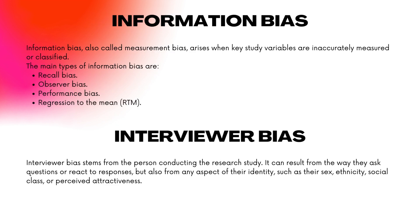Information Bias, also called measurement bias, arises when key study variables are inaccurately measured or classified. It occurs during the data collection step and is common in research studies that involve self-reporting and retrospective data collection. It can also result from poor interviewing techniques or differing levels of recall from participants. The main types of information bias are recall bias, observer bias, performance bias, and regression to the mean (RTM).